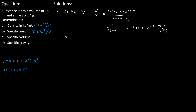Alternatively, we can find the specific volume nu from density. Specific volume nu is the reciprocal of density rho. Putting in the density of 1,600 kilograms per cubic metre found in Part A, we get specific volume nu equals 1 per 1,600, which is 0.625 times 10 to the power of minus 3 cubic metres per kilogram.